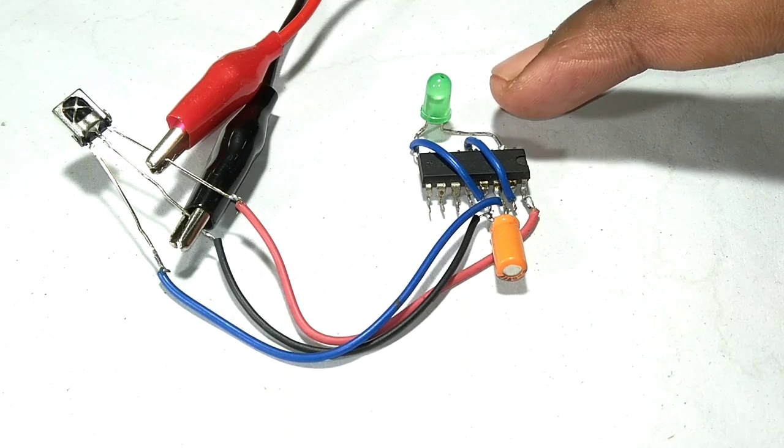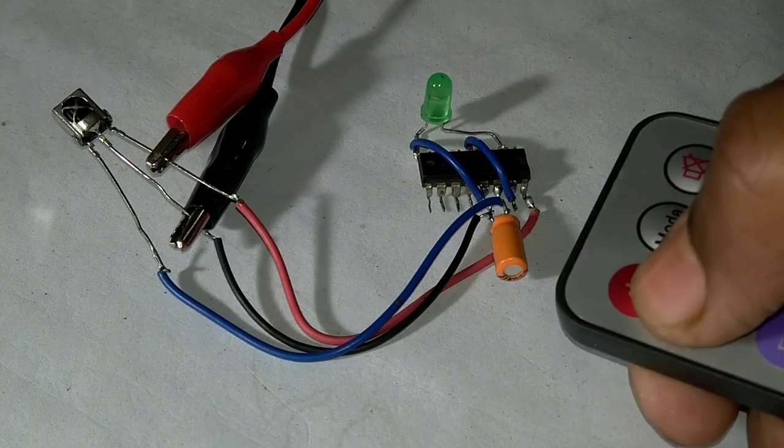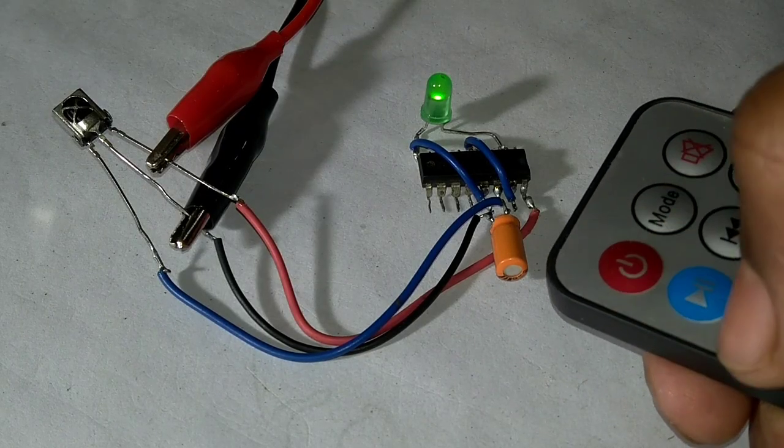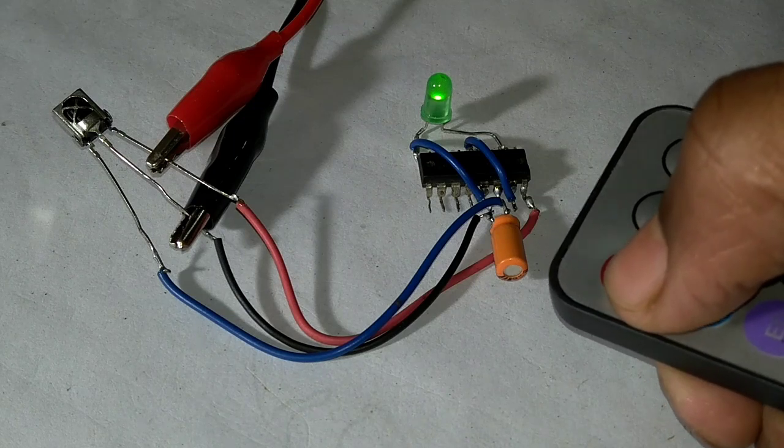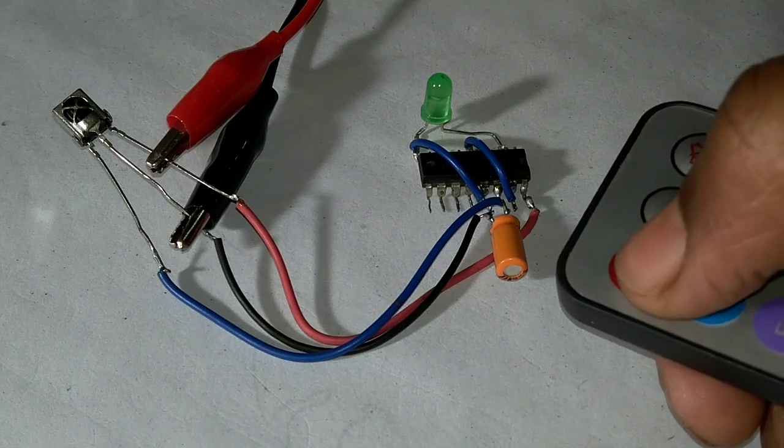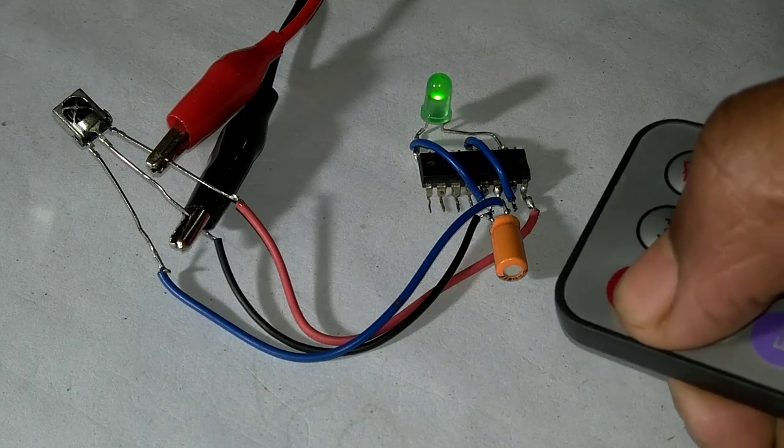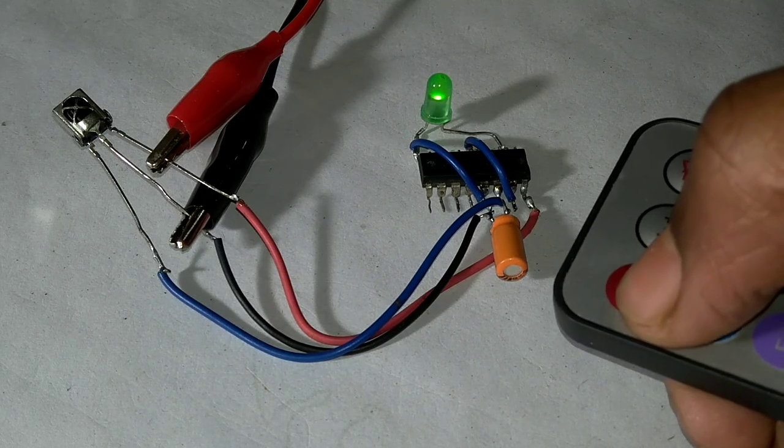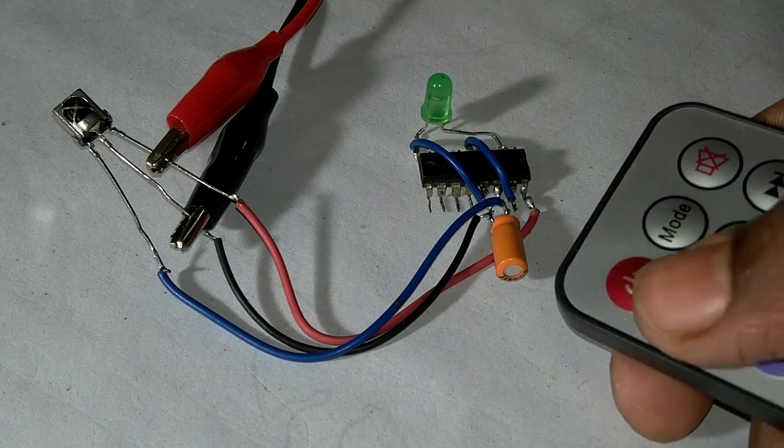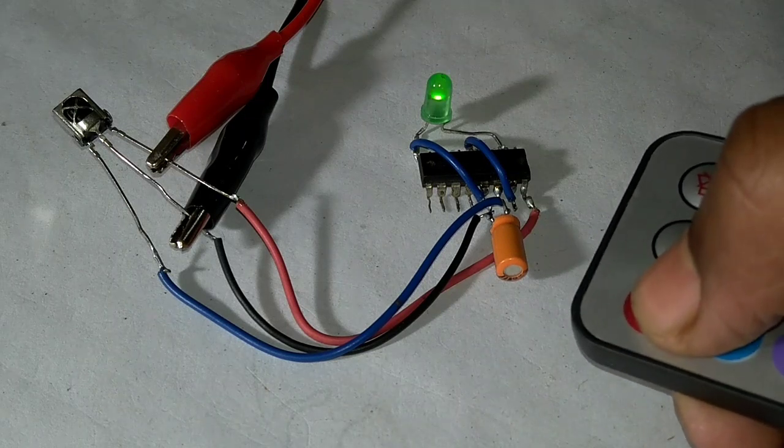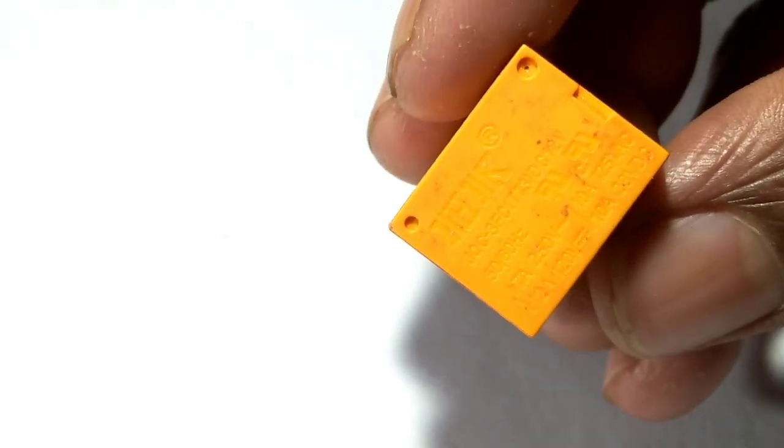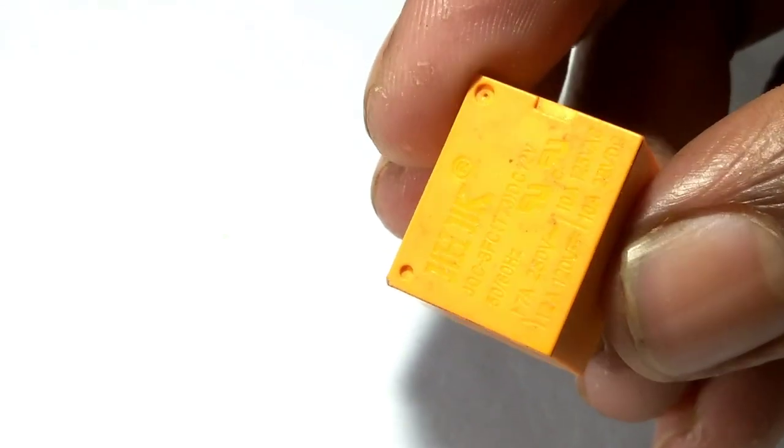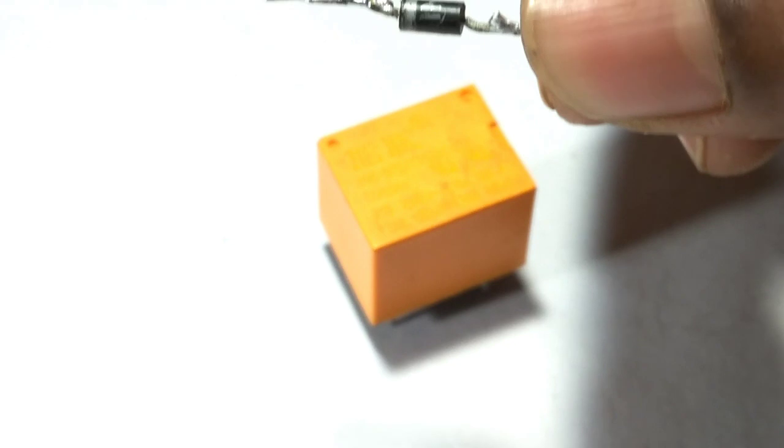And you can see that it turns on and off when I press any button on the remote. You can use any remote. So I'll connect an AC bulb, which means I need to make a relay module.